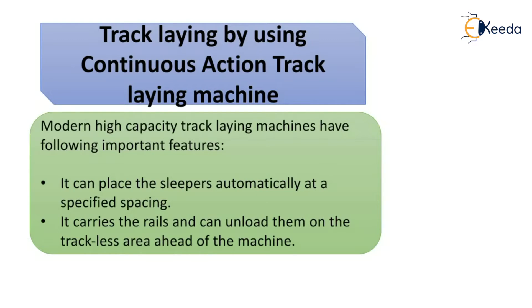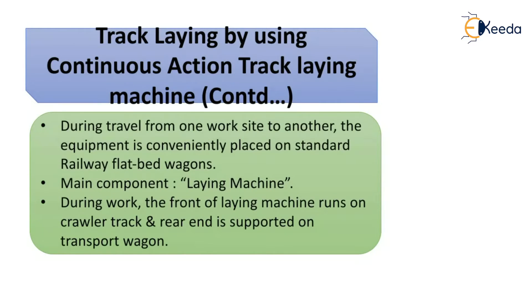Track laying using a continuous action track laying machine: this is a modern high-capacity track laying machine which can place sleepers automatically at a specified spacing. It carries the rails and can unload them on the trackless area ahead of the machine. During travel from one work site to another, the equipment is conveniently placed on standard railway flatbed wagons. During working, the front of the laying machine runs on a crawler track and the rear end is supported on the transport wagon.